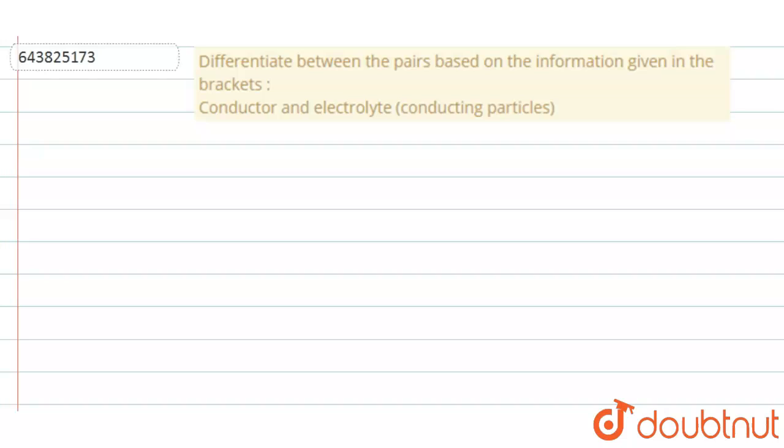Hi students, we have a question here. Differentiate between the pairs based on the information given in the brackets: Conductor and electrolyte based on the conducting particles.